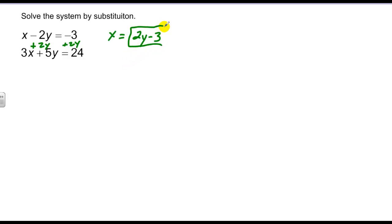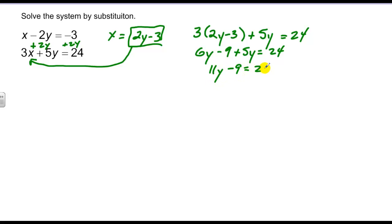And now that I know the value of x, I can substitute that into the other equation. So now I have 3 times x, which is now 2y minus 3, plus 5y is equal to 24. Distributing: 6y minus 9 plus 5y is equal to 24. 11y minus 9 is equal to 24. Adding 9 to both sides, I get 11y is equal to 33, dividing by 11. I get y is equal to 3.